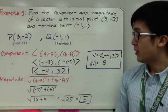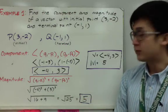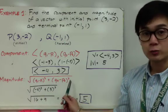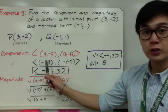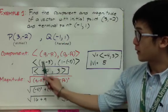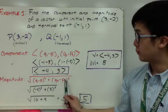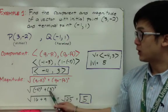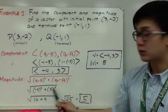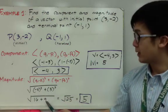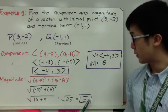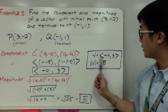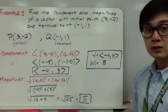To find the magnitude, we use the formula: square root of (q sub 1 minus p sub 1) squared plus (q sub 2 minus p sub 2) squared. Notice that the ordered pairs from the component form can be used directly. So we have the square root of negative 4 squared plus 3 squared, which gives us the square root of 16 plus 9, which is the square root of 25, equal to 5. So the magnitude of this vector is 5. To summarize: the component is (negative 4, 3) and the magnitude is 5.